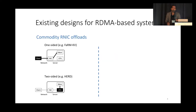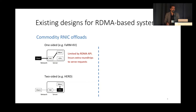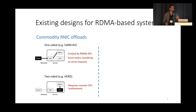There are many existing designs for RDMA-based systems. There are one-sided approaches that rely on one-sided verbs like RDMA read and write. One of the downsides of these systems is that because they're limited by the RDMA API, if they want to do any more complex computations, they essentially have to do it on the client, which can mean extra round trips to the server. There are also two-sided approaches, which is essentially implementing RPCs over RDMA. The obvious downside here is that you're consuming server CPU resources since you're no longer reliant on the one-sided RDMA verbs.